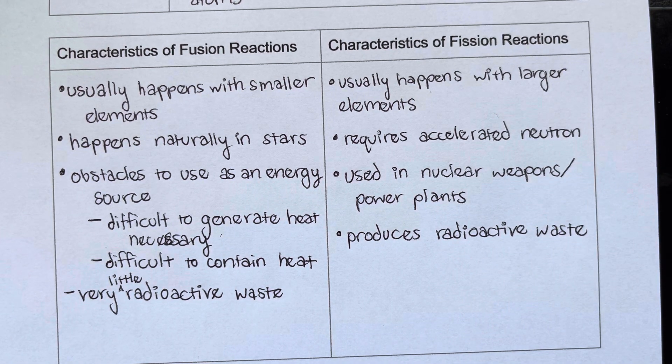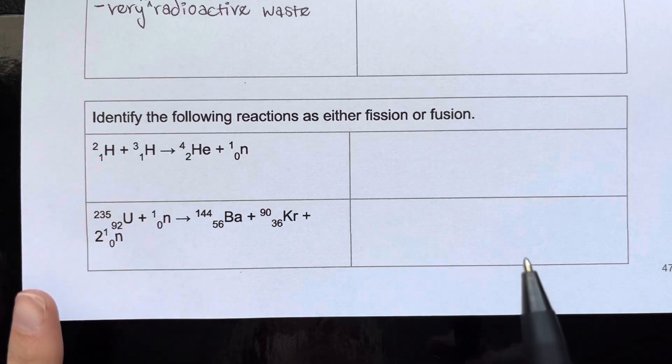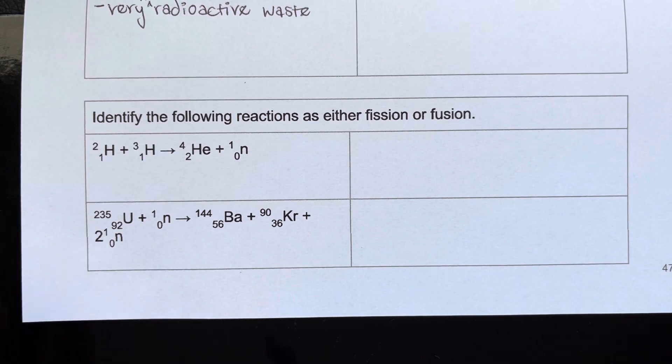All right, so those are our characteristics of fission and fusion reactions. The only thing that's left is to show you how to distinguish between fission and fusion. So we've got two nuclear reactions right in here. One is fusion, one is fission.